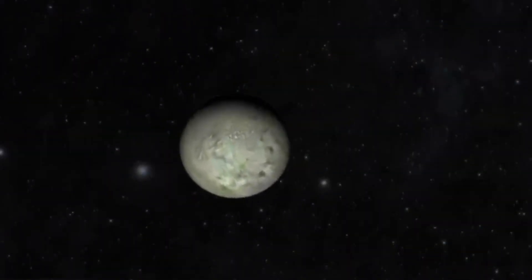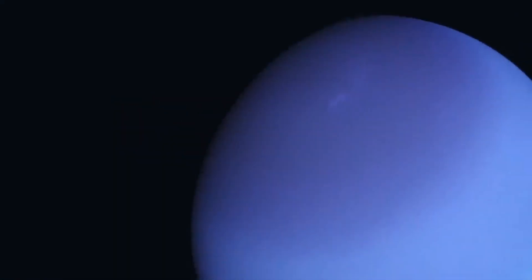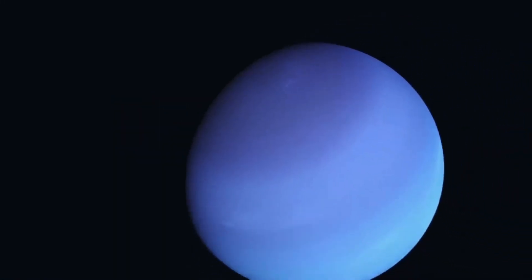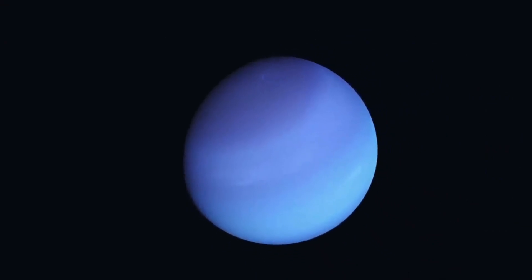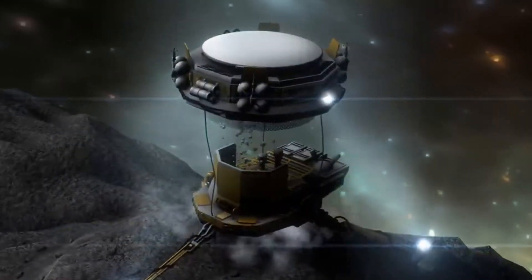The Neptune dark spot is thought to be caused by a combination of factors, including the planet's rapid rotation, its strong magnetic field, and its turbulent atmosphere.